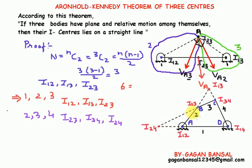If links one, two, and four are in relative motion to each other, they will also have three i-centers: i-12, i-24, and i-14. From the figure we can see i-12, i-24, and i-14 also lie on a straight line. So I hope you are clear about Arnold-Kennedy's theorem.